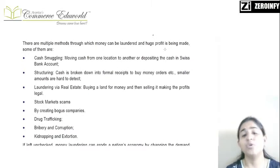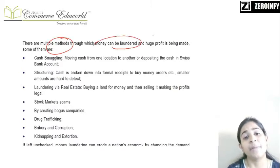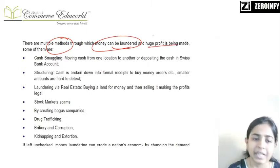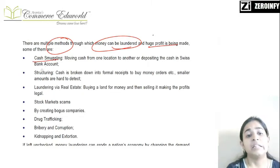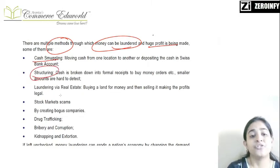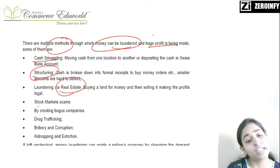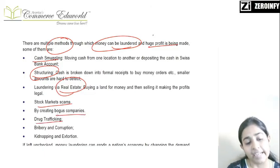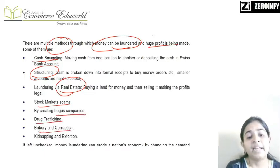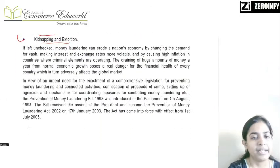Now they have given examples of different types of methods through which money can be laundered and huge profit is made: cash modeling involving too many cash transactions, transaction structuring, money laundering through real estate, stock market scams, creating bogus companies, drug trafficking and dealing in drugs, bribery and corruption, kidnapping and extortion. These are some of the methods and examples of money laundering.